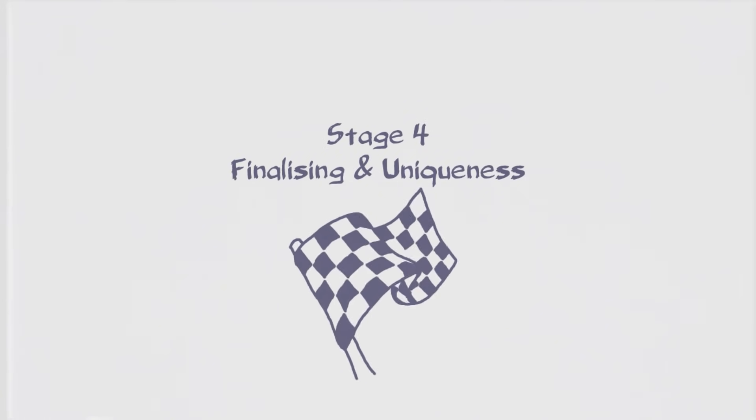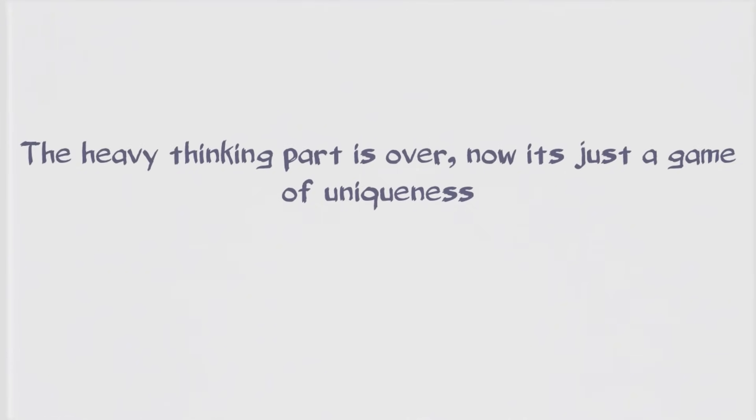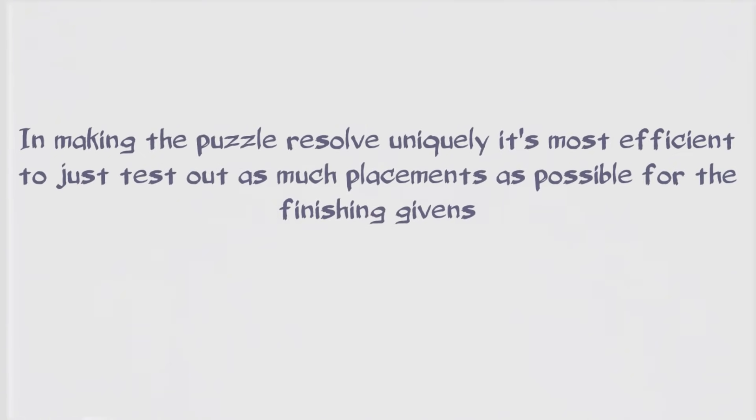Stage 4, finalizing and uniqueness. So once you have a setup that's secure and where using the intended logic the puzzle gives way, it's all a matter of making it unique now. If the prior stages weren't finicky enough, well strap in because here is where you'll likely end up pulling your hair out. During these final moments of the construction process, I recommend taking a step back, not thinking about the exact specifics of how the puzzle will resolve, but instead targeting those stronger cells in places of the grid that aren't unique yet. Still being mindful to avoid damaging bilocals or placements that would bypass the setup.